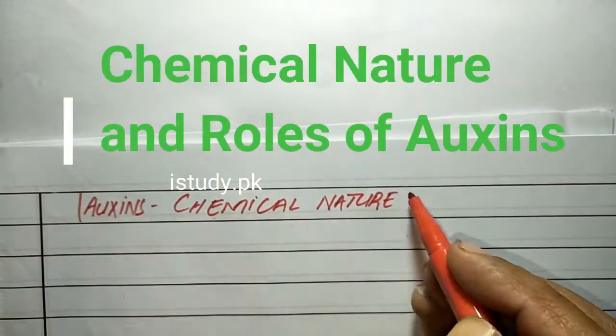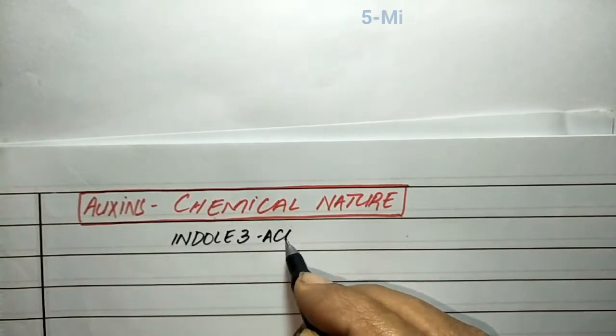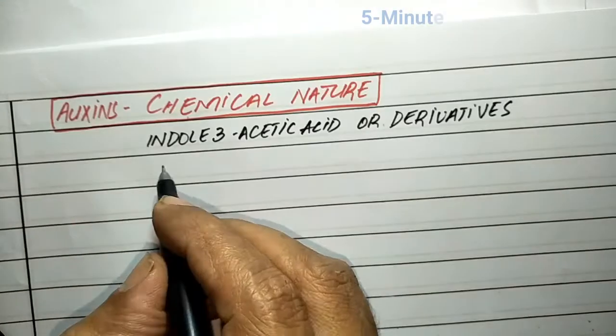Today, we will discuss the chemical nature of auxins. Chemically, auxins are derivatives of indole acetic acid.